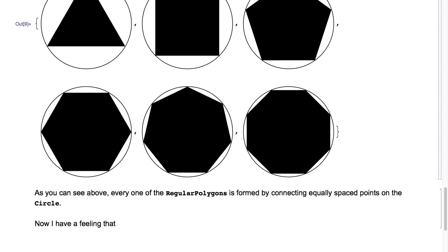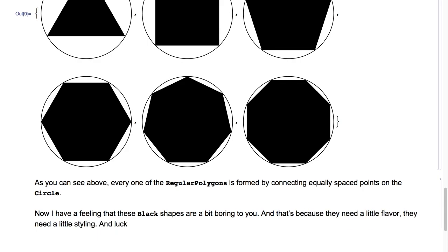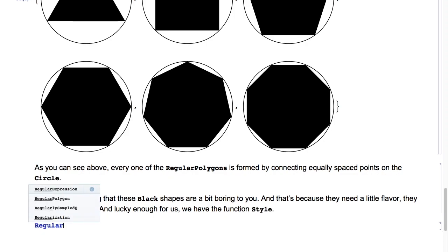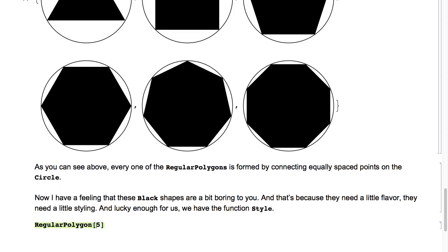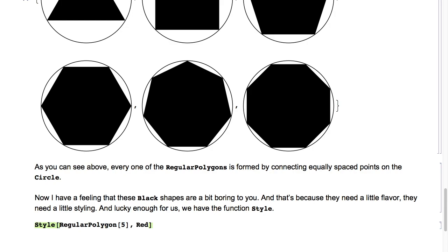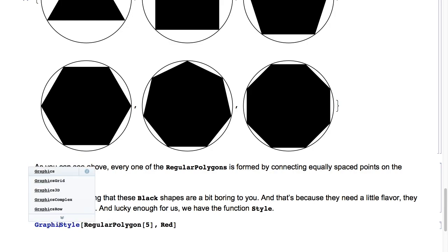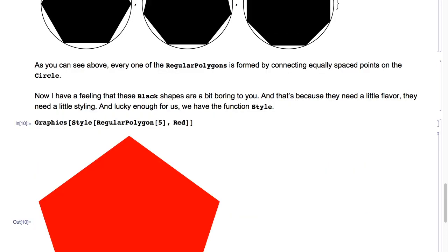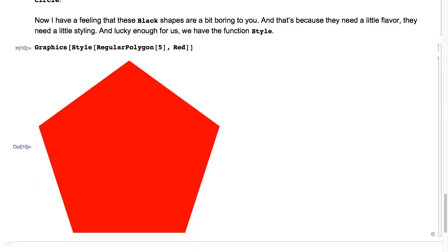Now these black shapes are a bit boring — they need a little styling. Lucky enough for us, we have the function Style. So here we'll type RegularPolygon of five, wrap it in Style with comma Red, then wrap it all in Graphics, hit Shift+Enter, and we get a red pentagon.